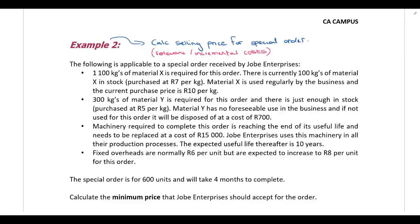The following is applicable to a special order received from Job Enterprises. 1,100 kilograms of Material X is required for this order. Currently we have 100 kilograms of material sitting in stock that we purchased for 7 Rand per kilogram, and the current purchase price is 10 Rand per kilogram.